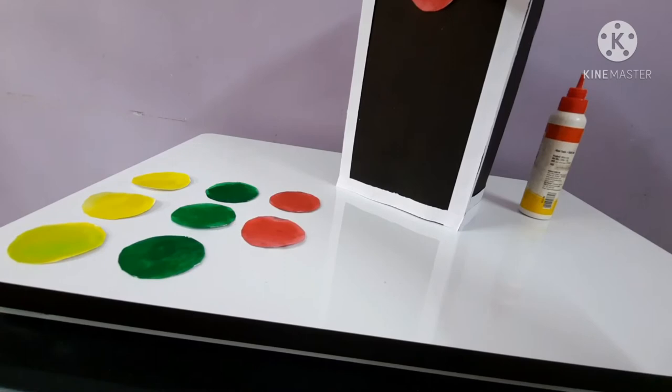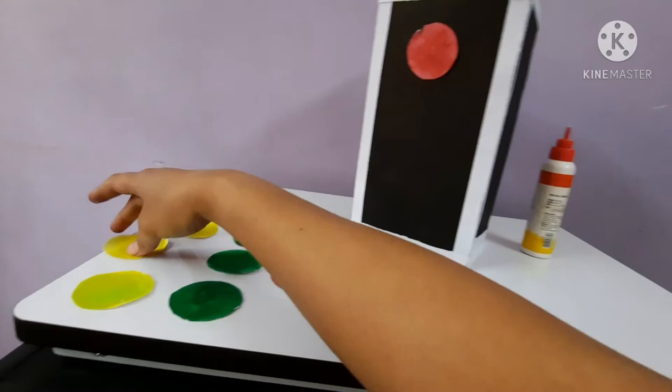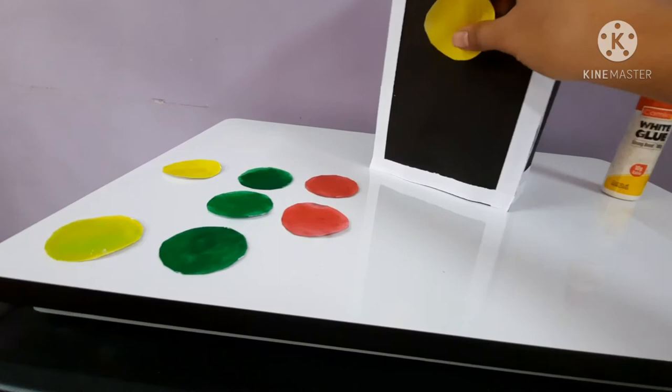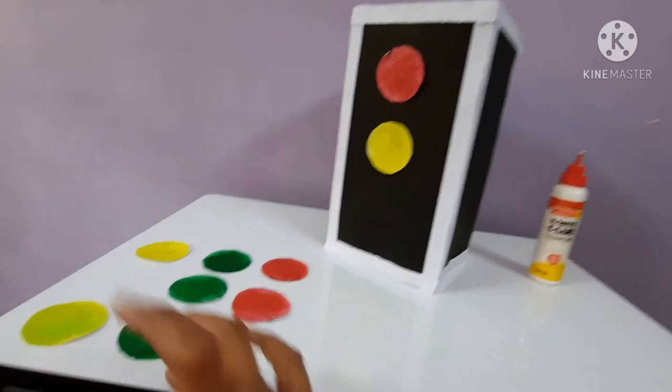After that, yellow light. Take the yellow piece of paper, again apply Fevicol and then stick it below the red light. Like this.